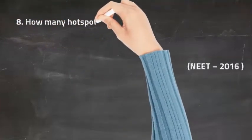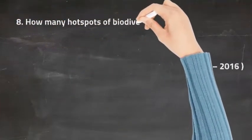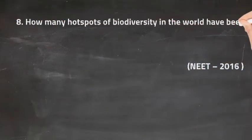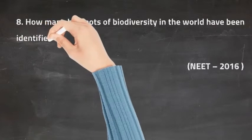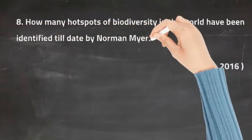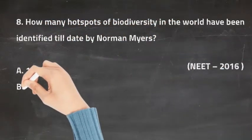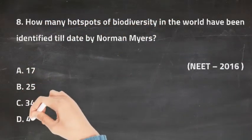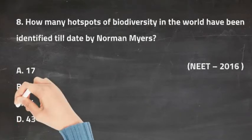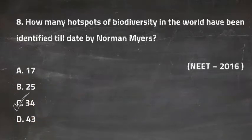Q8: How many hotspots of biodiversity in the world have been identified till date by Norman Myers? Option A is 17, Option B is 25, Option C is 34, and Option D is 43. The right answer is Option C, 34.